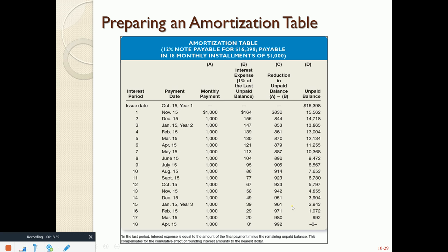You will always see that the interest and the reduction in principal will always equal $1,000. Earlier in the loan, the principal piece is less and the interest piece is more, but as you get towards the end of the loan, the principal piece is more and the interest piece is less. This is true for those of you that own a mortgage — in the beginning you feel defeated because the vast majority of your payment goes to interest. But with the power of math, if you stick with your mortgage long enough, you will see that changes.